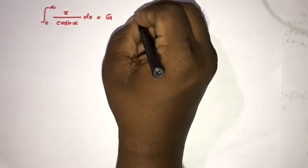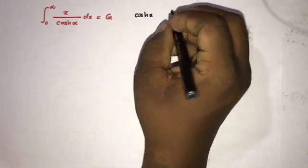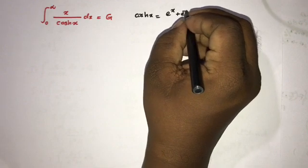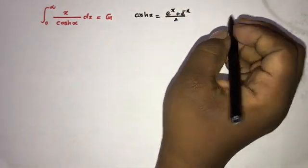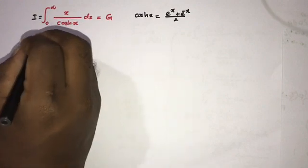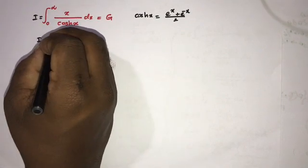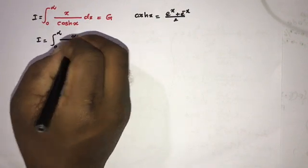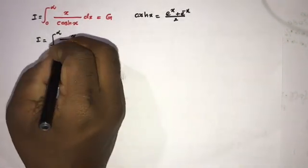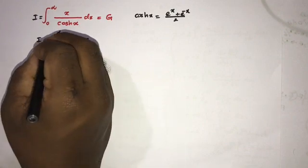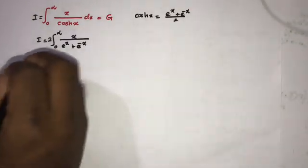To begin, I am going to express hyperbolic cosine of x using exponentials. We know cosh(x) equals e to the x plus e to the minus x, over 2. Now we can set up our integral I, plugging in this expression for hyperbolic cosine, so we have the integral from 0 to infinity of x divided by that quantity, and we can bring the 2 up front.